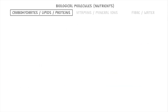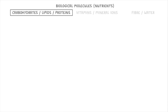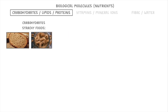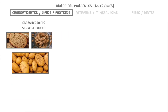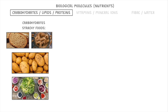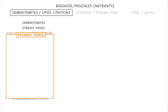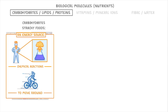Let's start off with carbohydrates, lipids and proteins, as these are the main nutrient groups that make up the large majority of our diets. Carbohydrates are found most in starchy foods like bread, pasta and potatoes, as well as in fruits and vegetables. And the main reason we need carbohydrates is as an energy source, so they provide us with most of the energy that we need to carry out chemical reactions and move around.